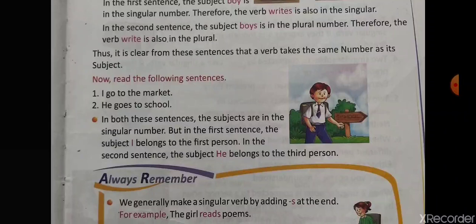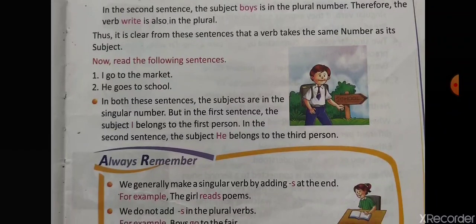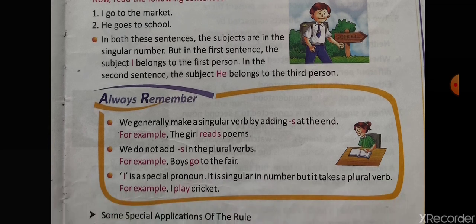Next example: 'I go to the market' and 'He goes to the market.' In both of these sentences, the subjects are in the singular number. But in the first sentence, the subject 'I' belongs to the first person, and in the second sentence, the subject belongs to the third person. That is why in one sentence we use 'go' and in the other we use 'goes'.